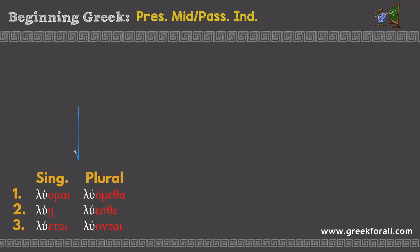This is the paradigm for the present middle passive indicative verbs. This paradigm must be memorized. Someone mentioned that the red color is not really good against this background, so I brightened it — let me know if this red looks better. Keep in mind that these letters are connecting vowels between the stem and the ending.